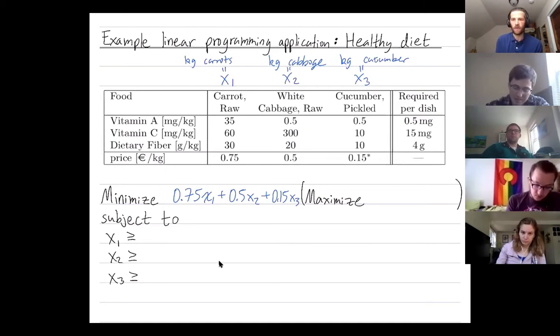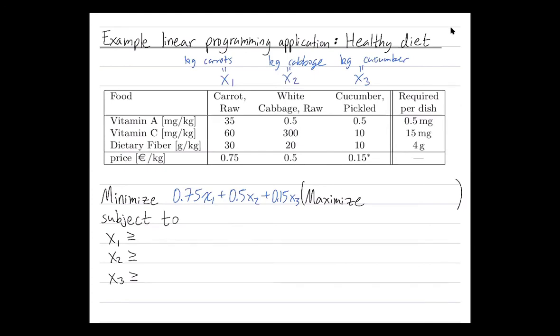Later in this class we're going to essentially recast every optimization problem as a maximization problem. And you can do that if we instead wanted to maximize something. Just multiply this function by negative one and then we're trying to maximize it.